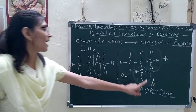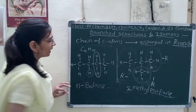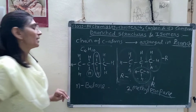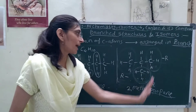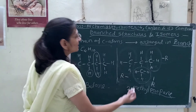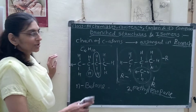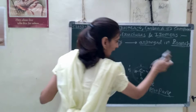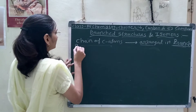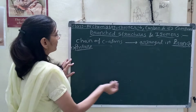2-methylpropane is the name of the branch structured compound. And n-butane is the name of the open chain compound. Next we will see the branch structure of pentane. N-pentane means open chain structure — 'N' means open chain structure. Its chemical formula is C5H12 (2n+2, where n=5 gives 12 hydrogen atoms). First we will see the branch structure.